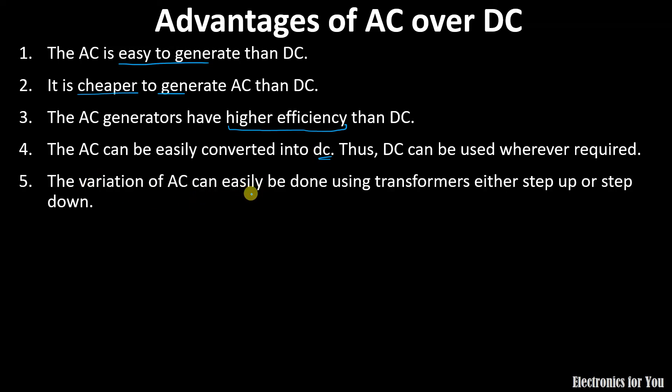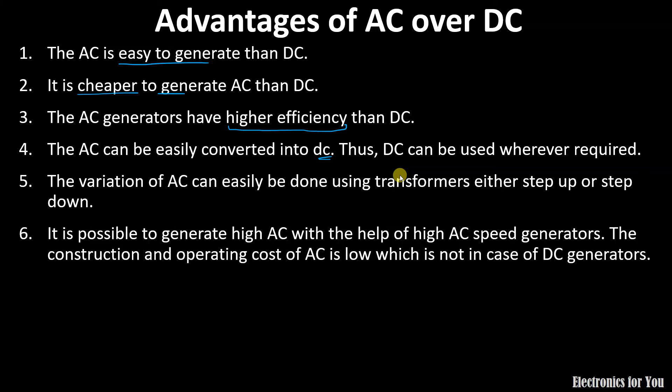The variation of AC can be easily done by using transformer. You can increase and decrease the level of AC by using transformer. Whereas, it is somewhat harder in case of DC.